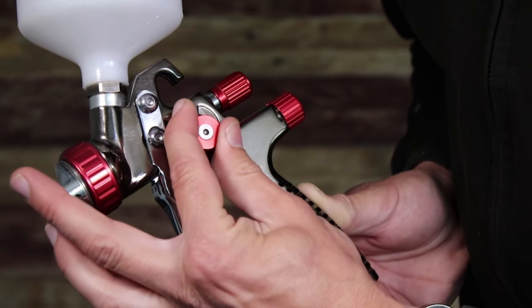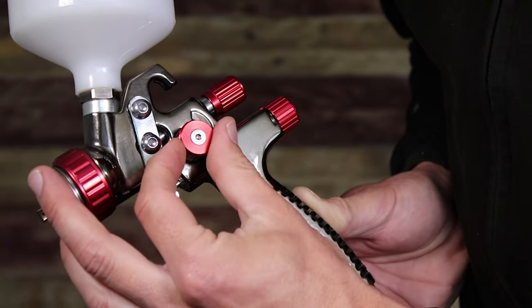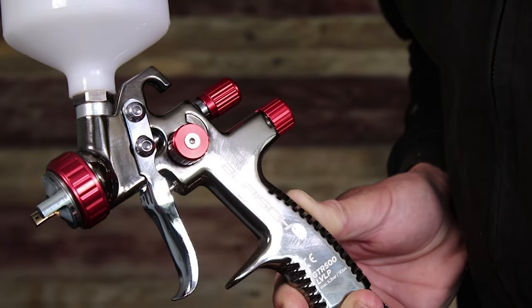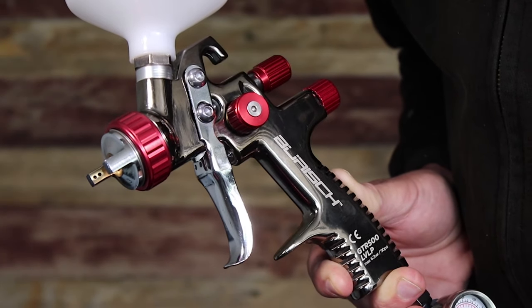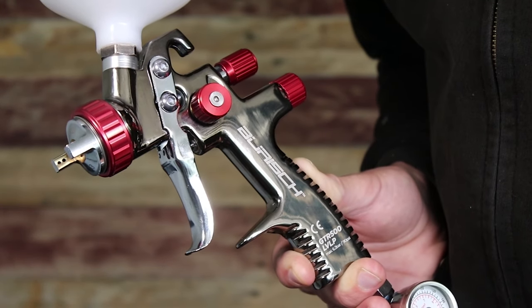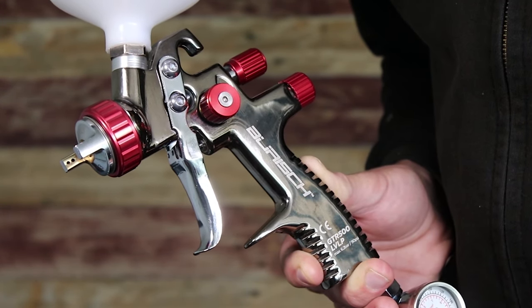Turning the adjuster clockwise will make the fan size smaller. Generally you'll want to close off the fluid adjustment a fair amount if you want a smaller fan pattern, as the paint will tend to build up too much in a small surface area causing runs.